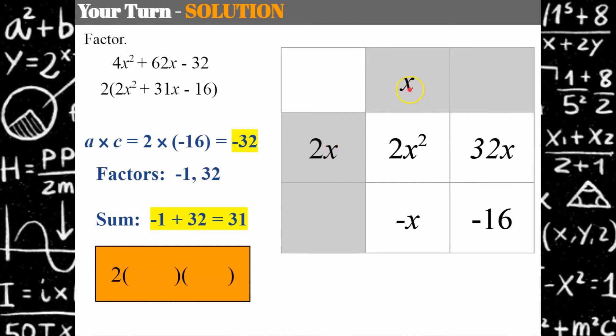2x times x is 2x², x times negative 1 is negative x, 2x times 16 is 32x, and 16 times negative 1 is negative 16. So I'm ready for my binomial pair: (2x - 1)(x + 16). Don't forget our greatest common factor here too, because that has to be. So this is what we call completely factored.